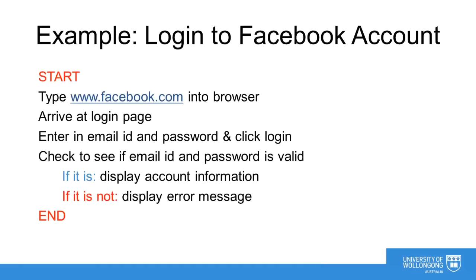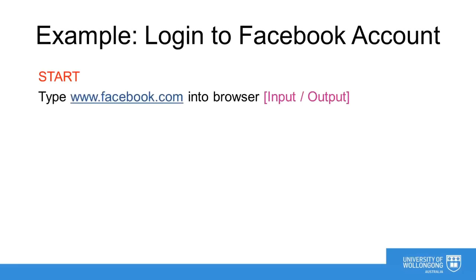Let's look at a slightly more difficult algorithm. Previously we analyzed the process of logging into Facebook and wrote some pseudocode on how this is achieved. I have now added an extra step to consider if the user has put in the correct user ID and password. Our first line requires the user to type www.facebook.com. This is an input output process. The user arrives at the Facebook page. This is a process.